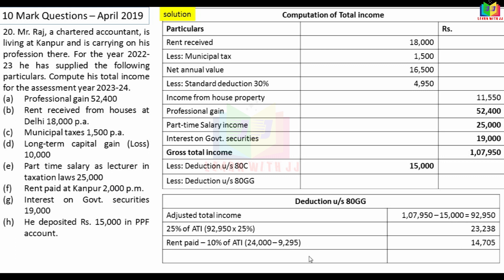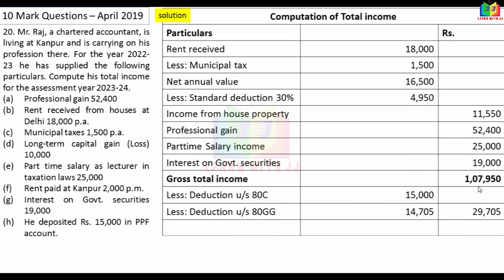Rent is Rs.2,000 per month, that is Rs.24,000 per annum. 25% of adjusted total income and Rs.5,000 per month i.e. Rs.60,000 - least of these is the 80GG deduction. Total deduction: Rs.29,705. Gross total income minus deductions gives taxable income: Rs.78,245.